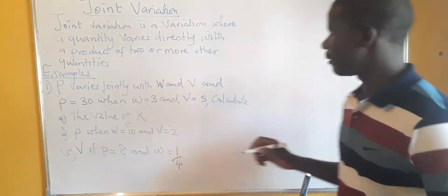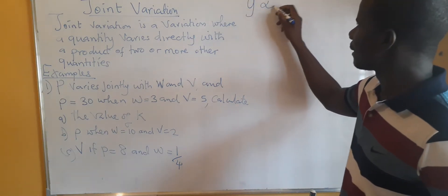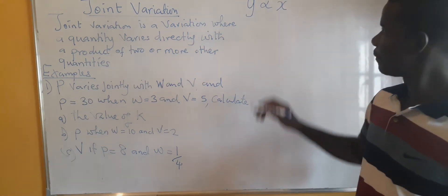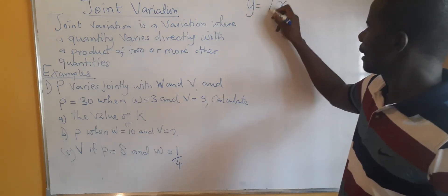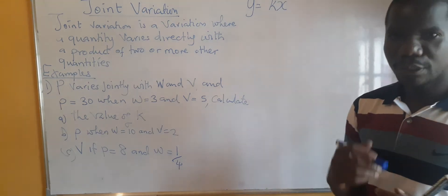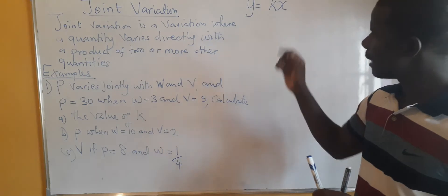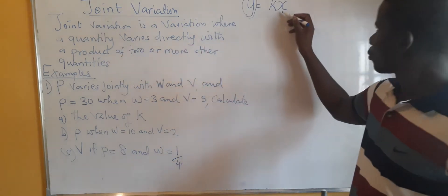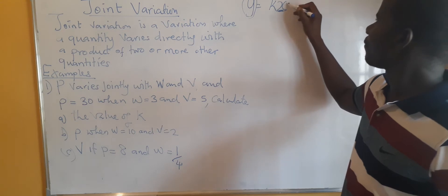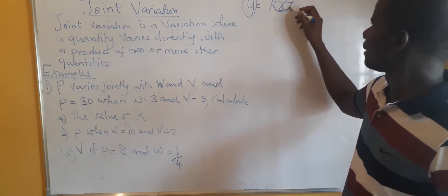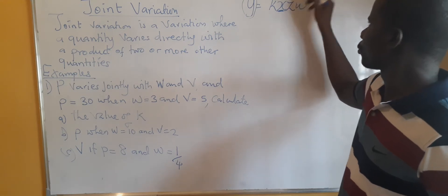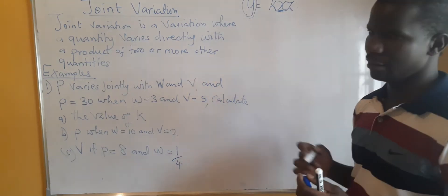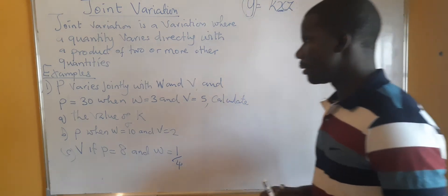When we were looking at direct variation, we were saying this is a quantity y which varies directly as x. When we write this as an equation, it was an equal sign then the letter k, which is a constant of the variation. Now we are saying the quantity varies directly with a product of two or more — instead of just having x, maybe we are going to have z, a product of x and z, two or more. That is joint variation.